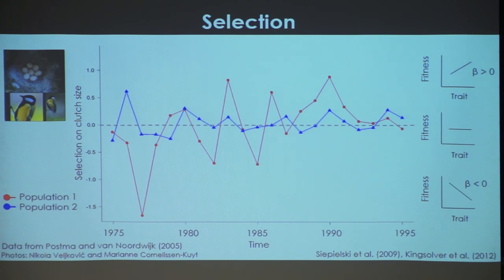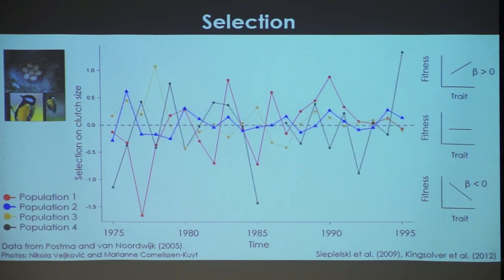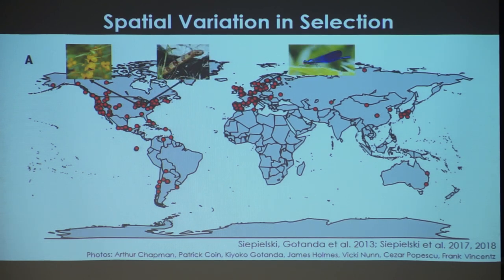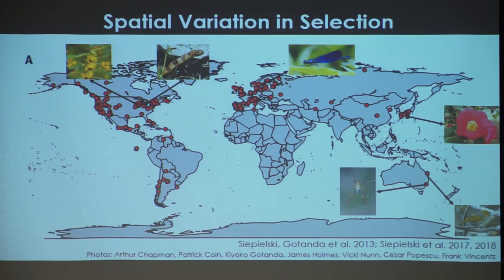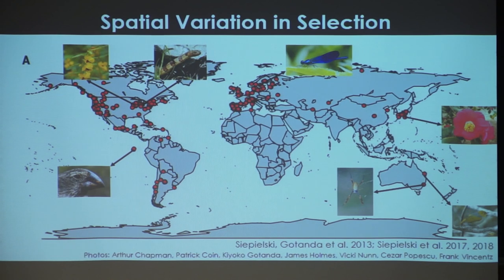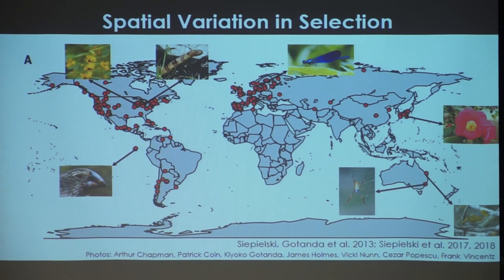Previous analyses have looked at the temporal dynamics of selection through time, but my colleagues and I were interested in the spatial variation — when there's this much variation going on in selection, is it the strength or the direction of selection that varies more? We assembled a global database of selection estimates from around the world, covering plants, invertebrates, and vertebrates. We found a signature of spatial variation in selection: selection tends to vary more in strength as opposed to direction. Further work found that one driver of spatial variation in selection is global precipitation patterns — interestingly, not temperature.